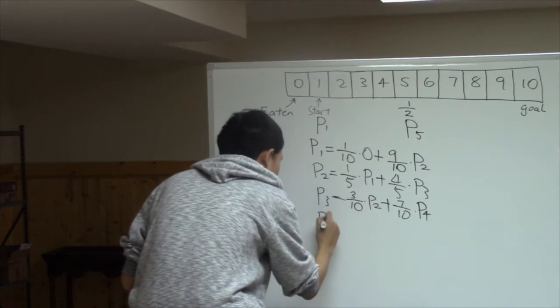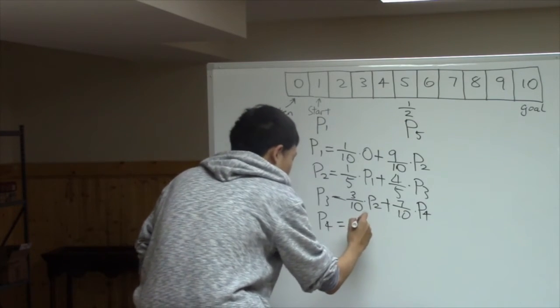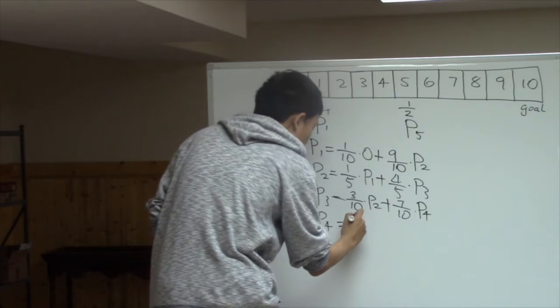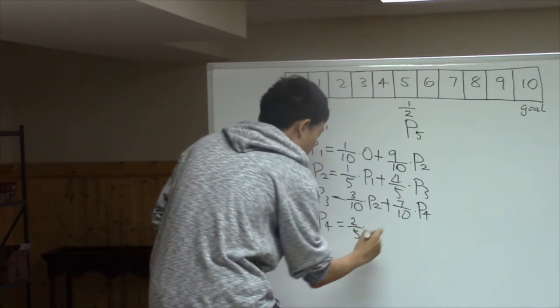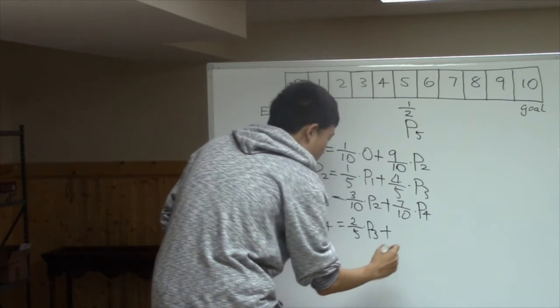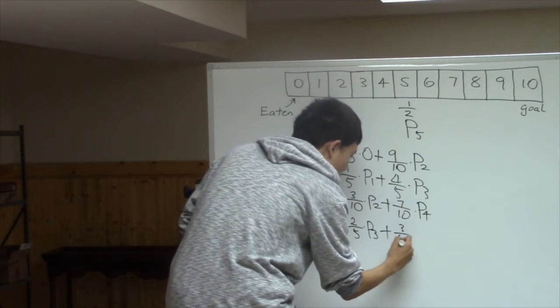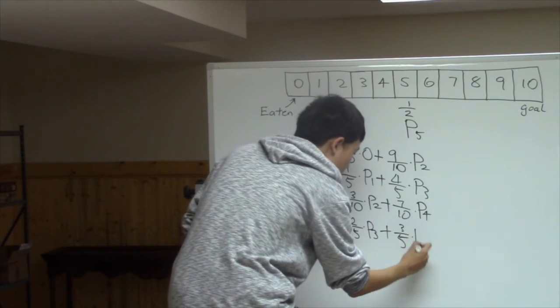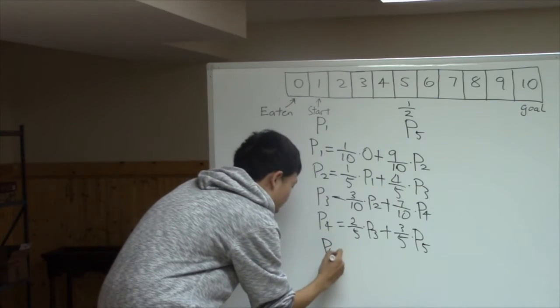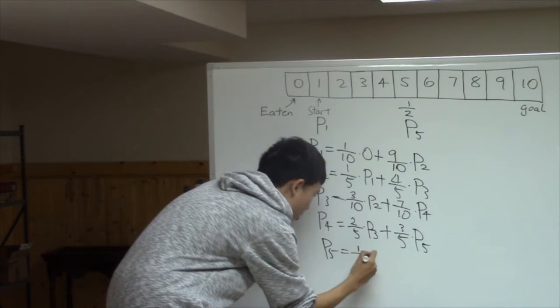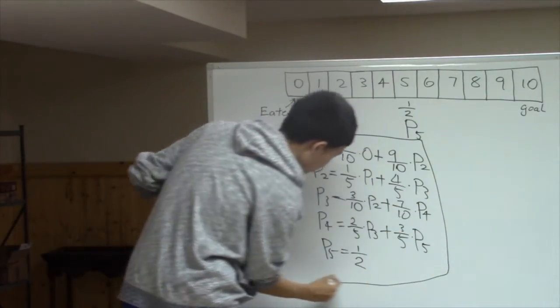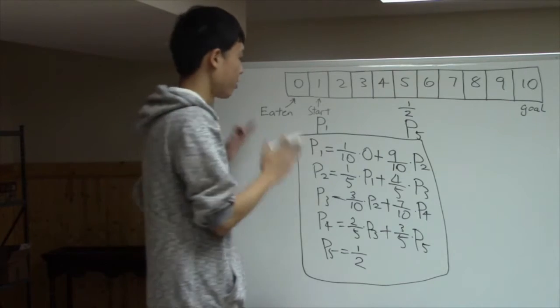And then p4 equals, going back, it's 4/10. So that is 2/5 times p3. Plus 1 minus this, 3/5 times p5. And at the end, we know p5 already. That is 1/2. So this part is the set of equations we have for now.